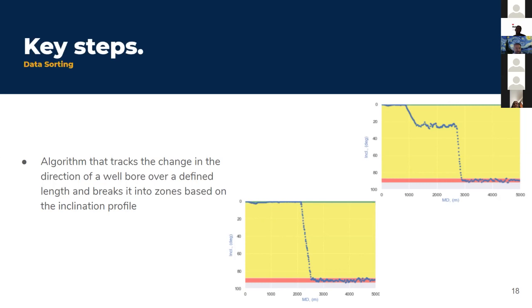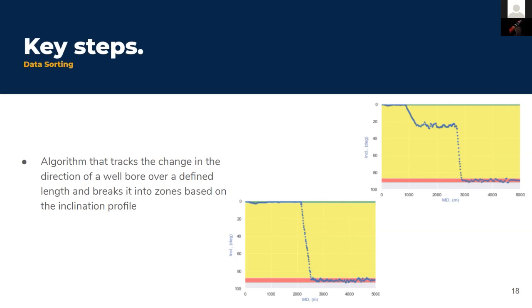A question is asked whether the genetic algorithm training runs continuously in parallel with operations and how long it takes to produce a recommendation. Vlad explains that currently around 500 wells were used to train the model. A second-stage application is being built where the operator selects which stage they are running, and each time the first stage runs, the second stage incorporates lessons learned from the previous stage to make the model more granular. Training time is lengthy, but prediction time is about 1.5 to 2 seconds.